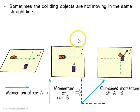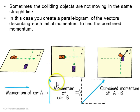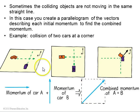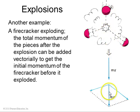There are more complicated collisions that happen in two dimensions. Sometimes the colliding objects are not moving in the same direction, in which case you can create a parallelogram of the vectors — because velocity is a vector, momentum is also a vector — and add them that way. Here, car B going north and car A going east produce a combined momentum to the northeast. Explosions also conserve momentum. A firecracker going downward explodes into two pieces, and when you add the momenta of the two pieces, the total is still directed downward.